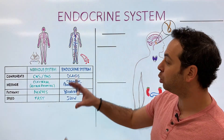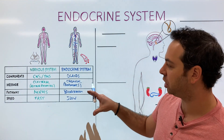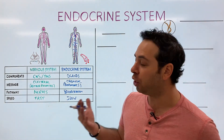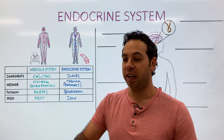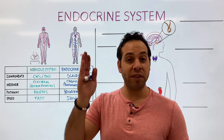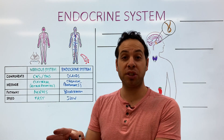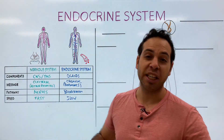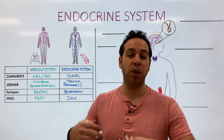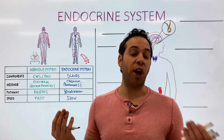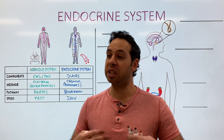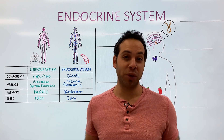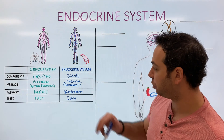The best analogy to understand these two systems: the nervous system is like an email — you send it to one person, you have a target, you know exactly who you're sending it to, and it's extremely fast, instantaneous. The endocrine system is more like a social media post — you put it out there, you don't know who's going to open it or when, it's extremely slow, and it's going to everybody. So there's a nice difference between the two.